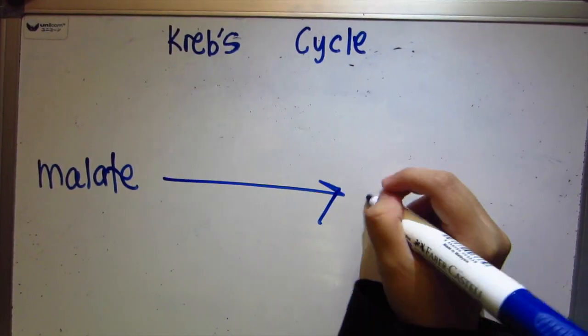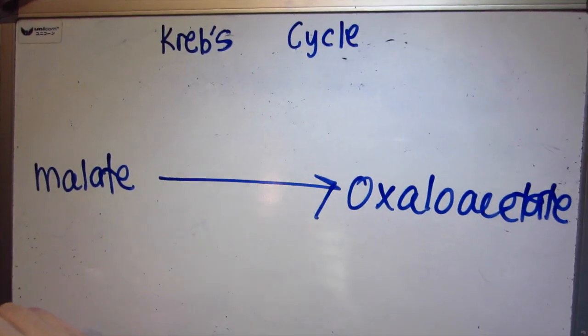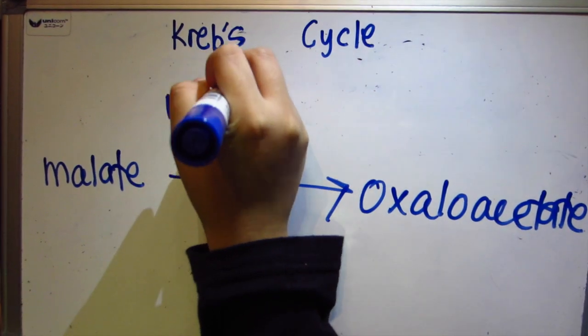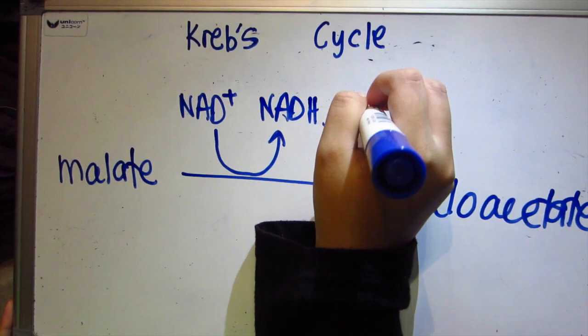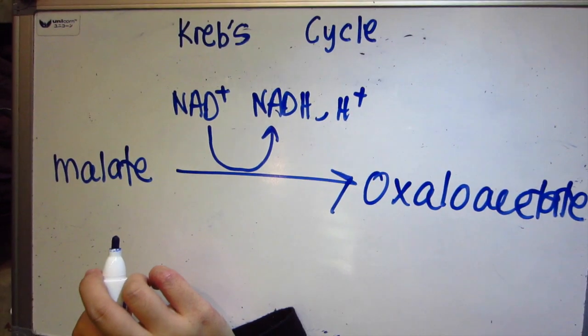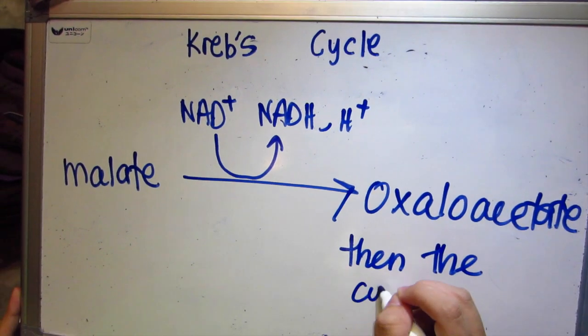Step 8, oxidation. In this final step, malate is oxidized to reform oxaloacetate, while NAD plus is reduced to NADH plus H plus. The regenerated oxaloacetate can now combine with another molecule of acetyl-CoA and the cycle repeats.